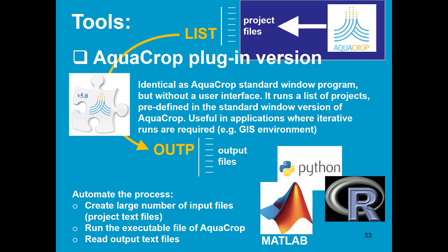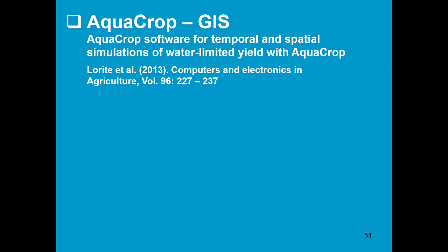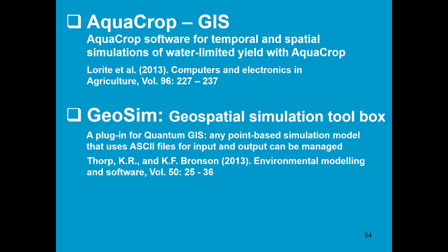To create a large number of input files, to run the executable file of the AquaCrop plugin, and to read the output text files, we can use software such as MATLAB, Python, and R. There also exists AquaCrop-GIS, in which AquaCrop is linked with a GIS module, as well as Geosim, which is a plugin for Quantum GIS. It can run for any point-based model like AquaCrop that uses ASCII files for input and output.